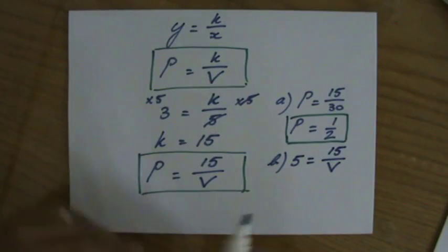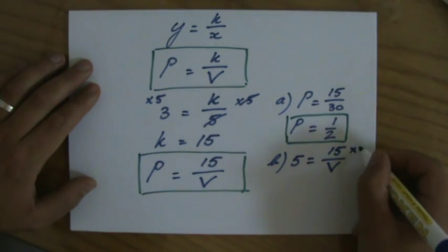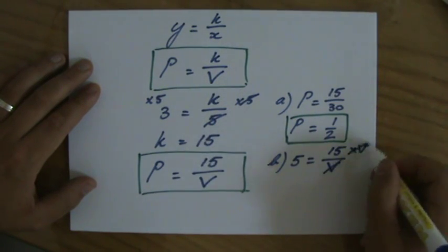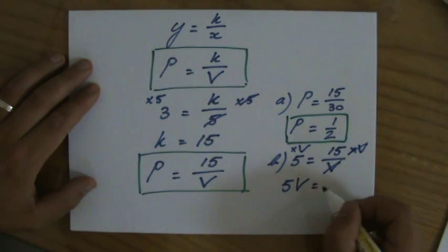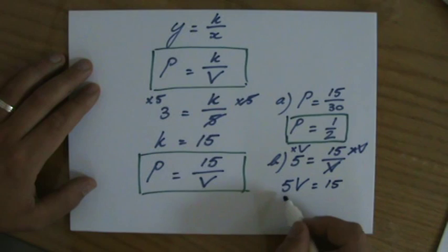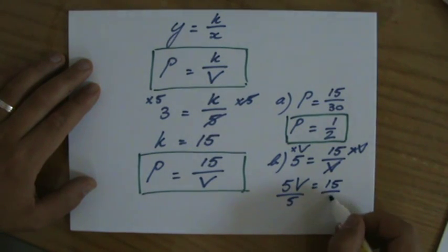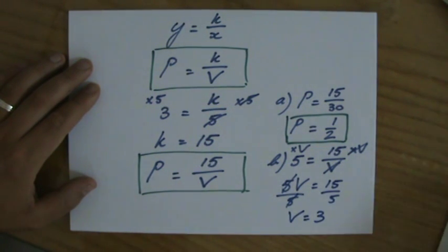Okay, one extra step rearranging this equation, times both sides by the volume. So 5 times the volume equals 15. And we divide both sides now by 5. So the volume equals 15 divided by 5 equals 3.